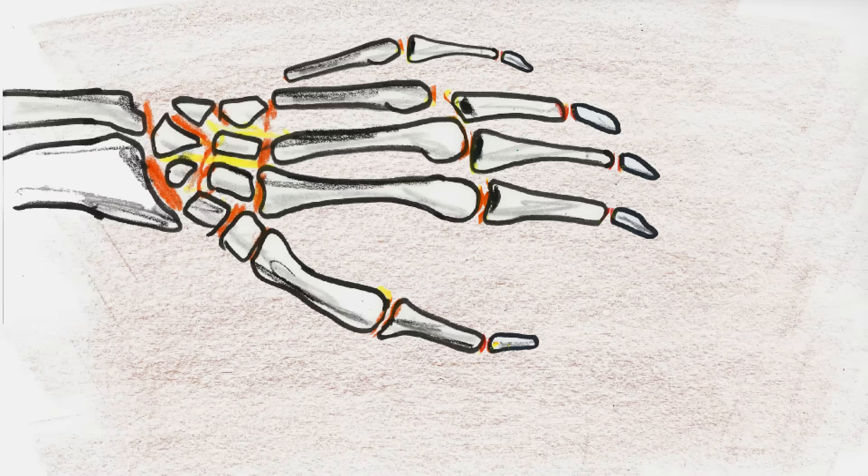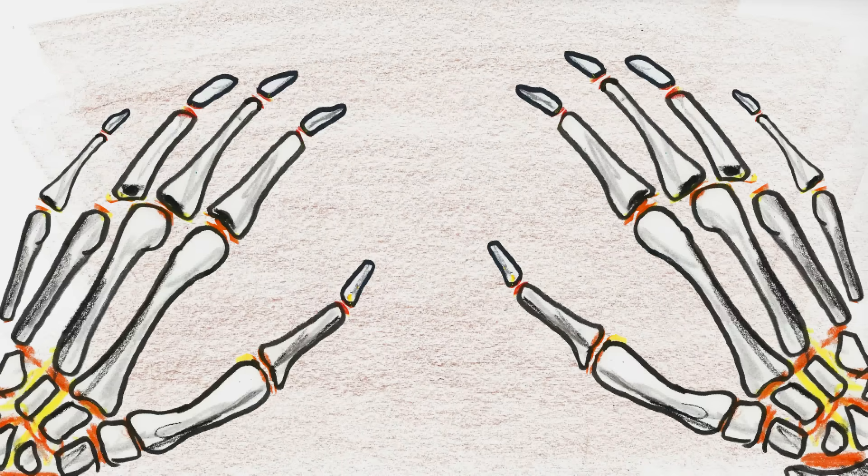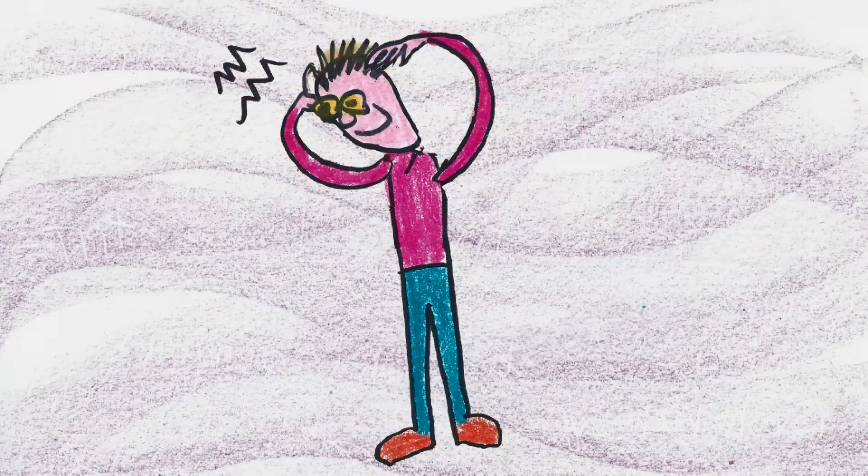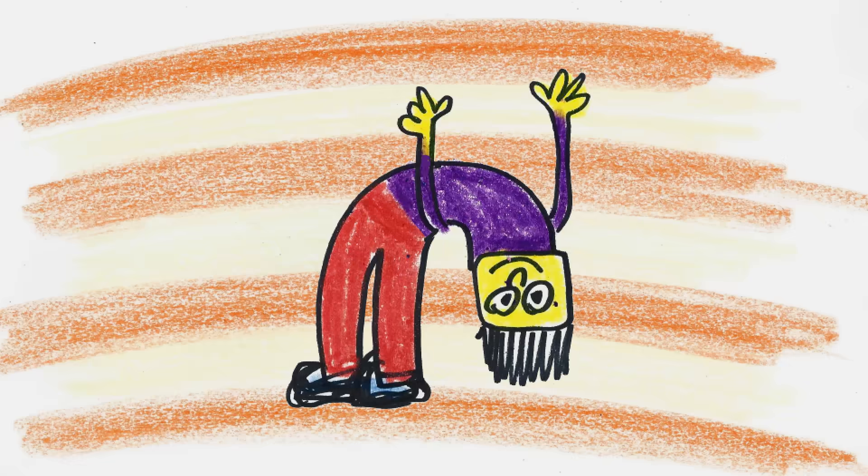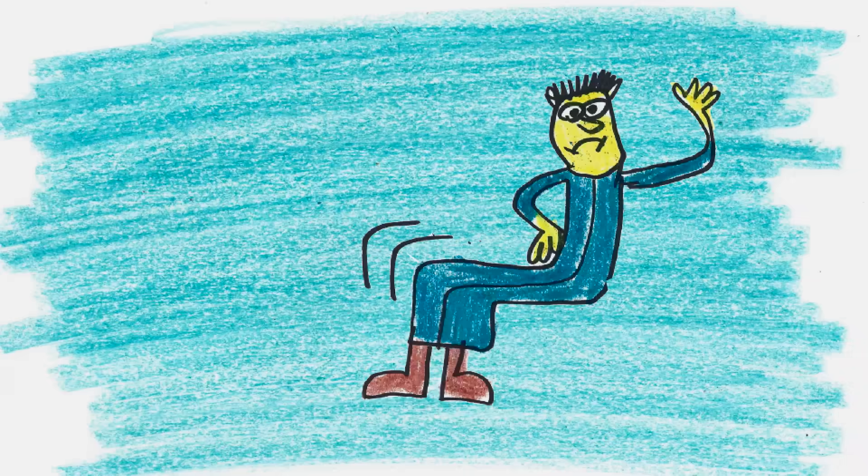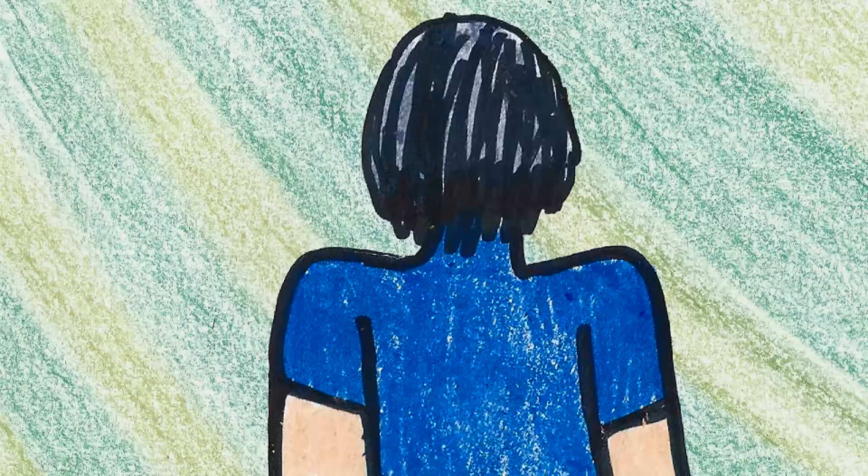The joints in your fingers are the easiest ones to crack, but many people also crack the joints between vertebrae in their neck and back, and even their hips, wrists, shoulders, and so on.